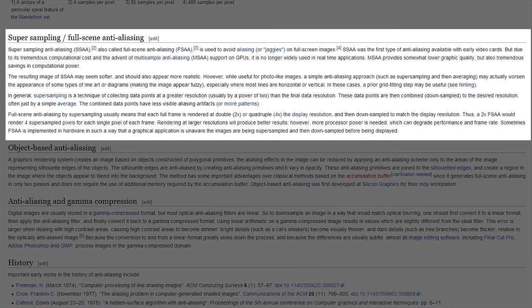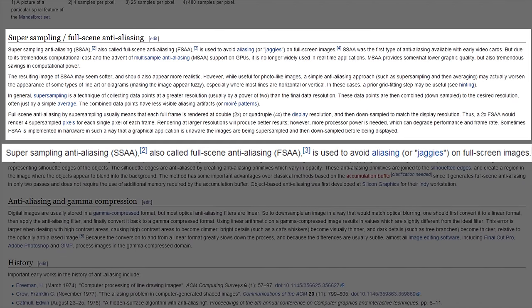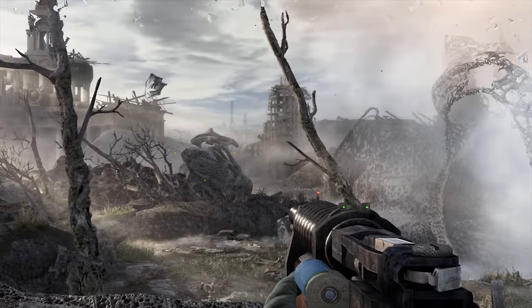MSAA and SSAA both fall under the first category. Super Sampling Anti-Aliasing, also known as Full Scene Anti-Aliasing, or FSAA, was the first type of AA available with early video cards. It is best used on photorealistic images, as it makes them appear softer and more lifelike.